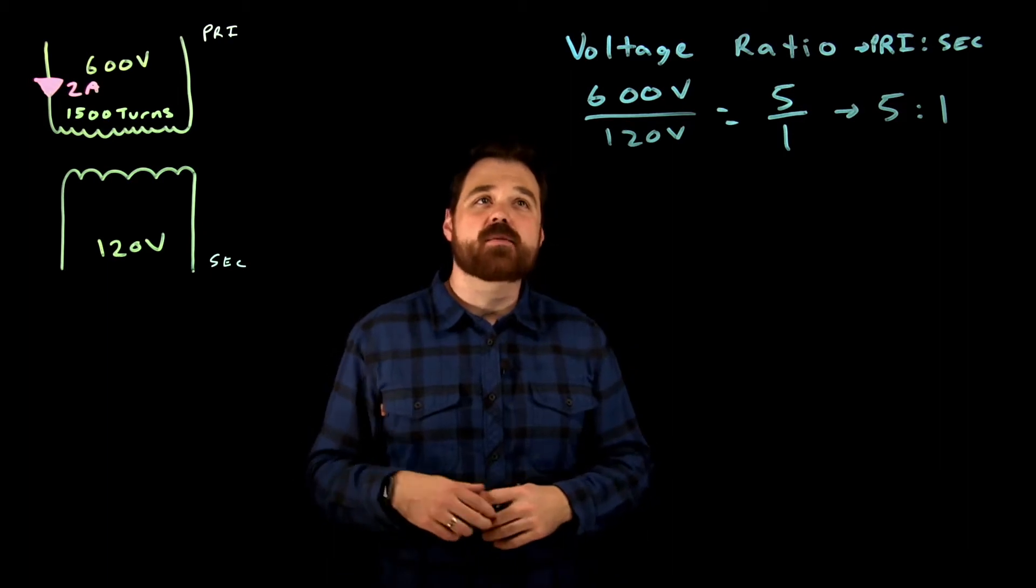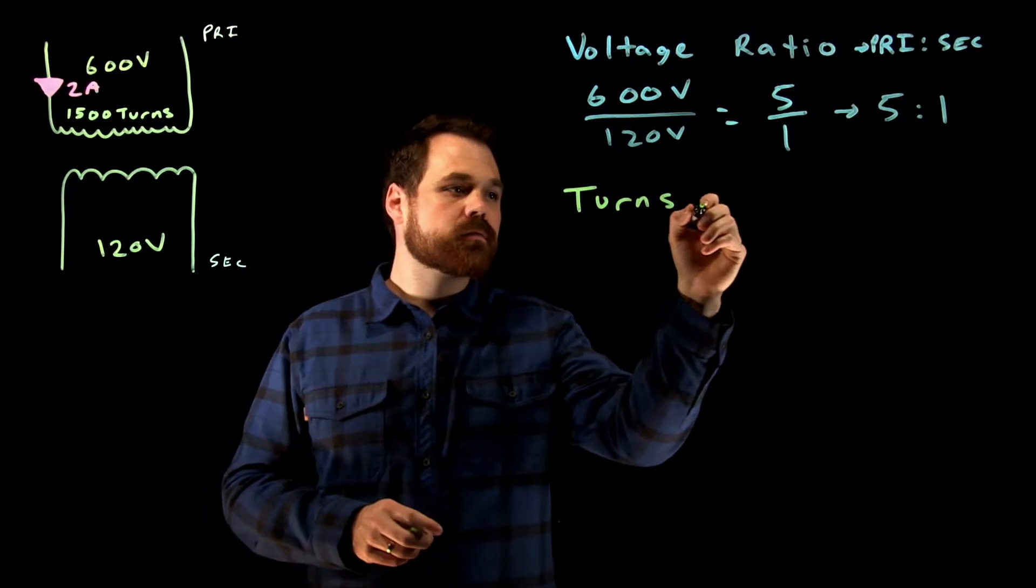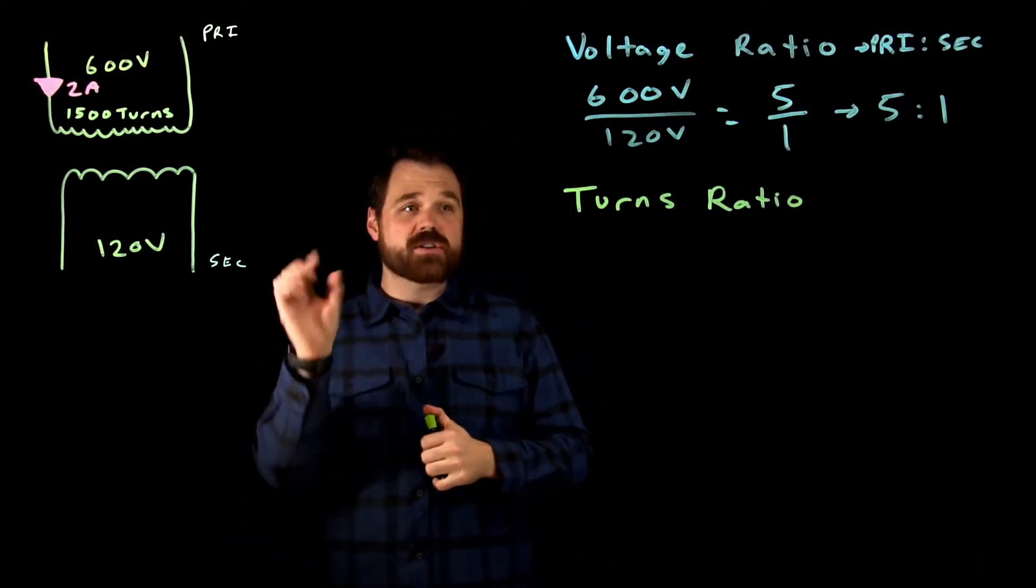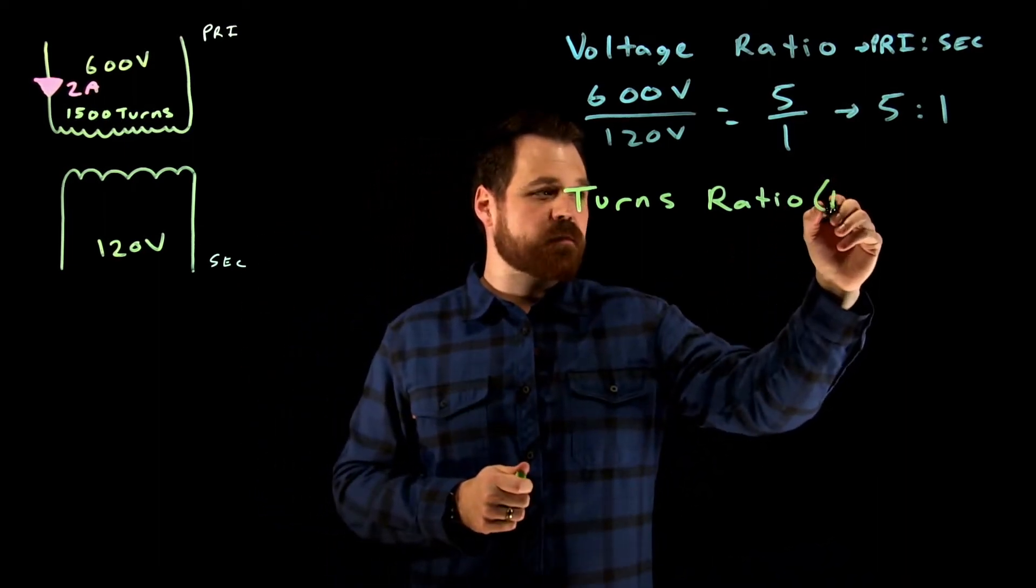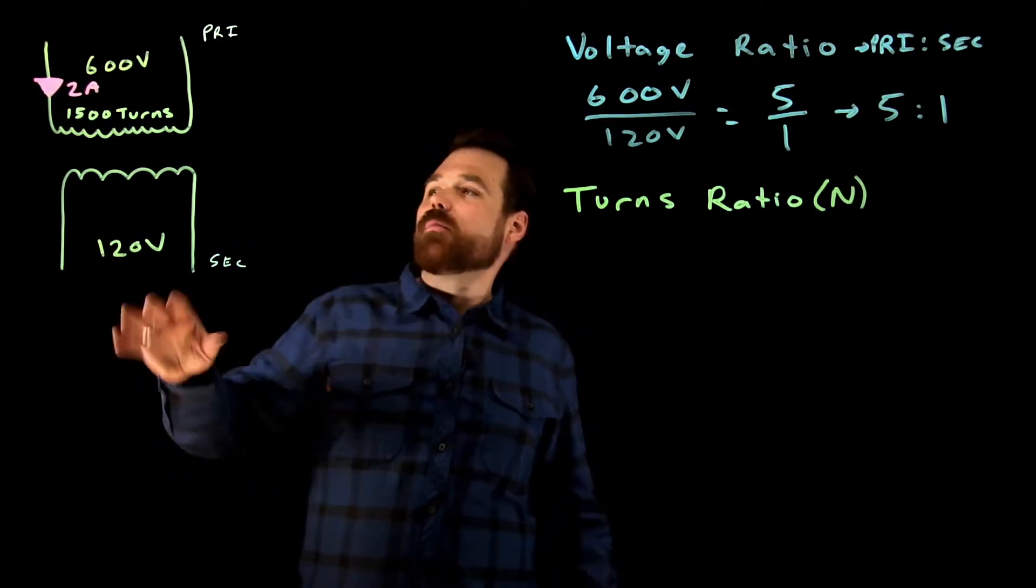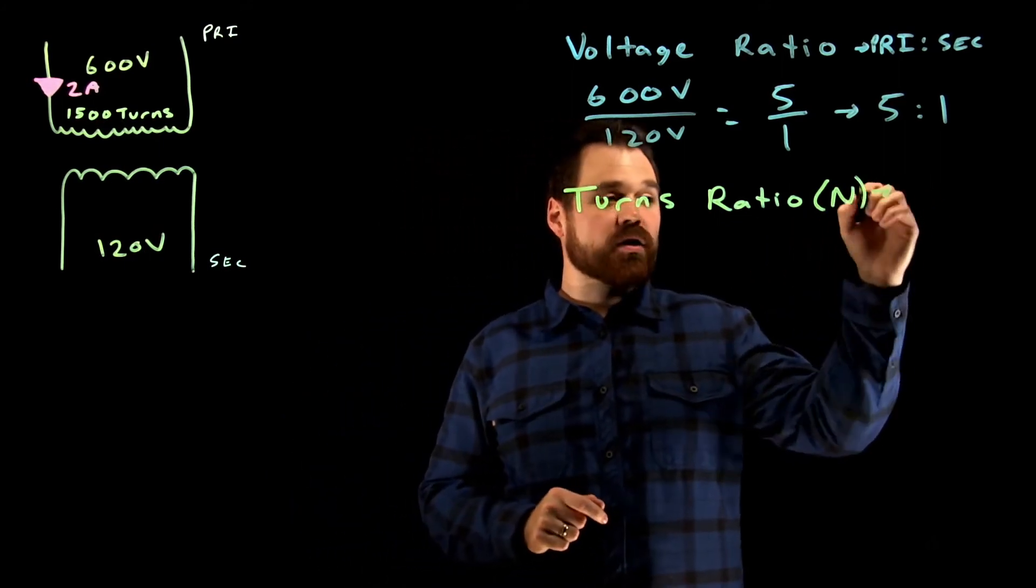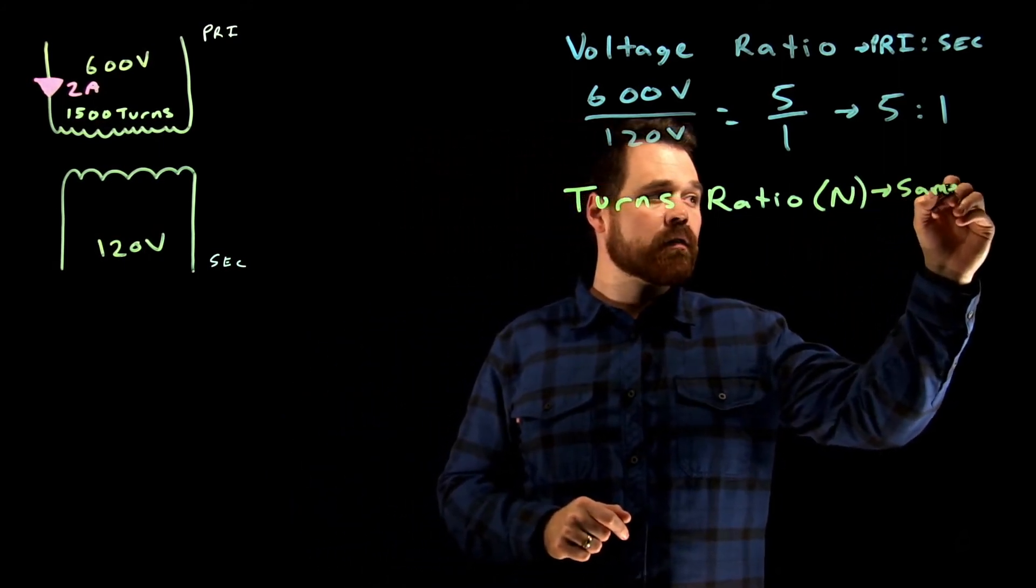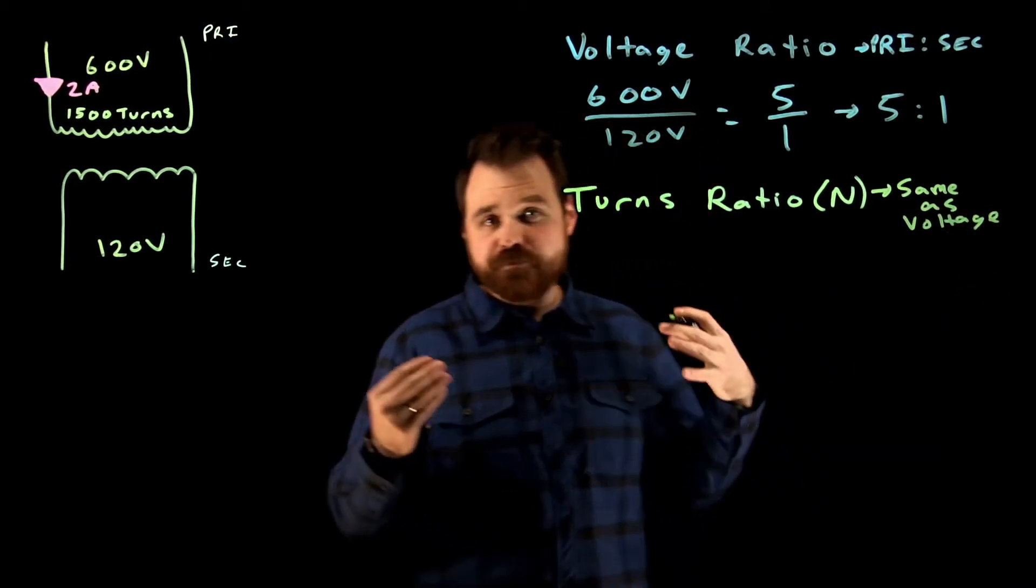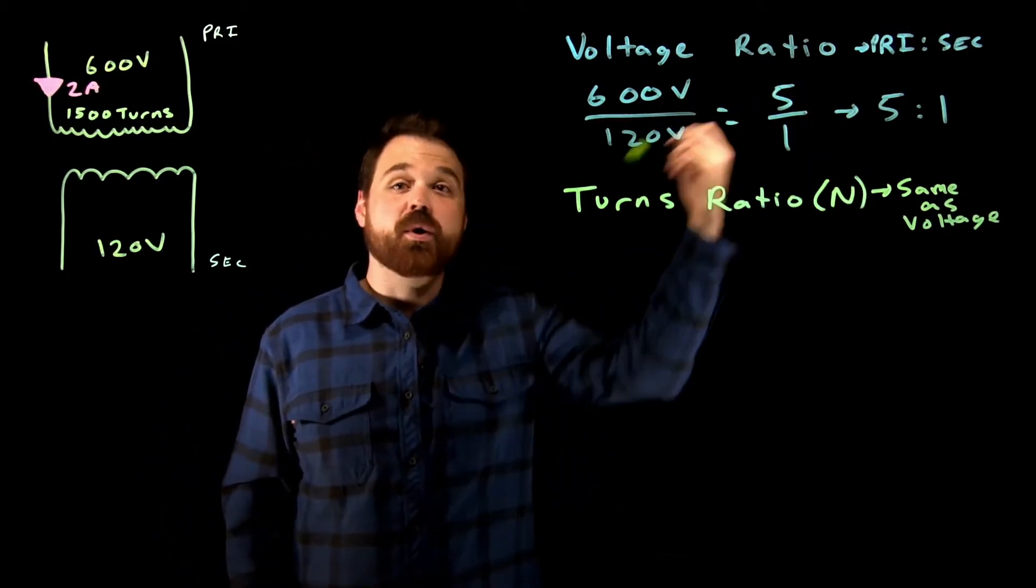Now the second one I want to talk about is our turns ratio. Now this is talking about the turns of wire. So often this will be represented by a capital N, the number of turns. So in this case, we're like, well, we only are told the primary is 1500 turns. That turns ratio is always the same as voltage ratio, meaning if this transformer had a five to one voltage ratio,